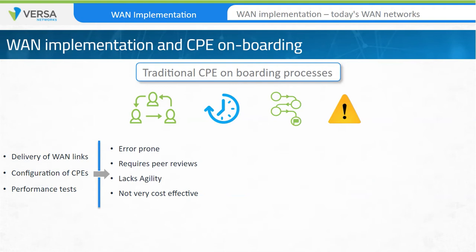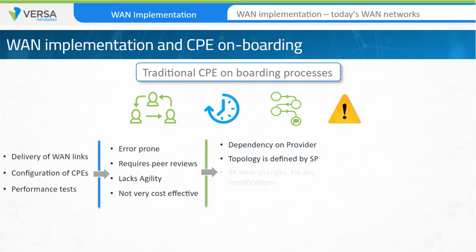Another important aspect of traditional WAN implementation is the dependency on the service providers. Service providers that provide MPLS-based VPN services have control over a customer's design and topology. Any change or update in the customer's current network topology or design has to be implemented by the service provider, which is again a time-consuming and very process-driven activity. With the widespread adoption of cloud-based consumption models like infrastructure-as-a-service, software-as-a-service, and platform-as-a-service, the industry is facing another challenge of implementing cloud-based branches.